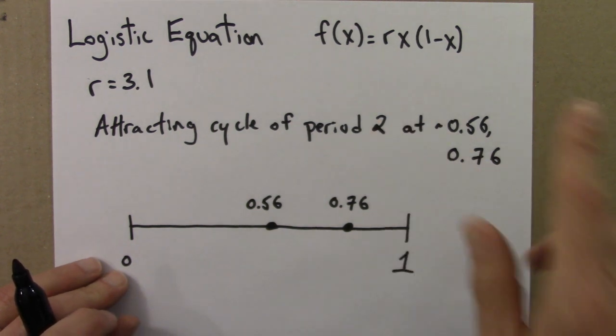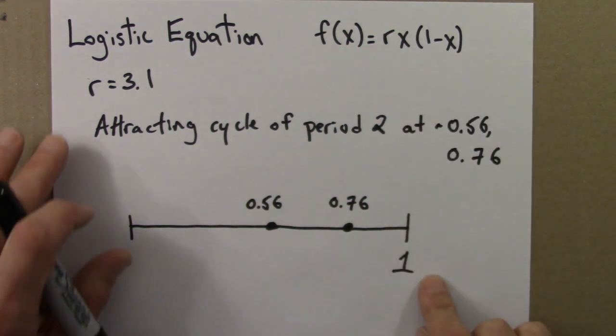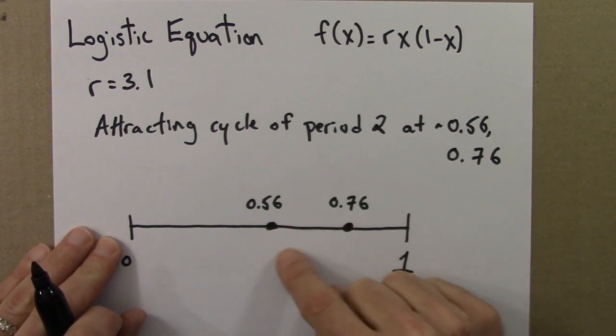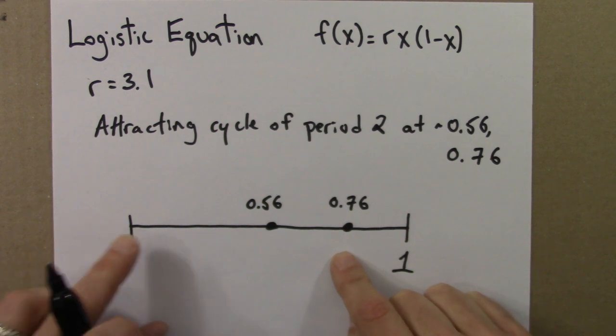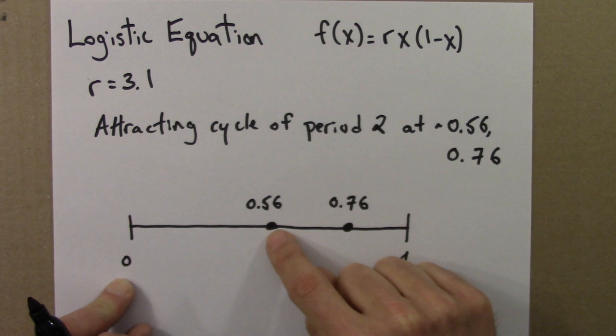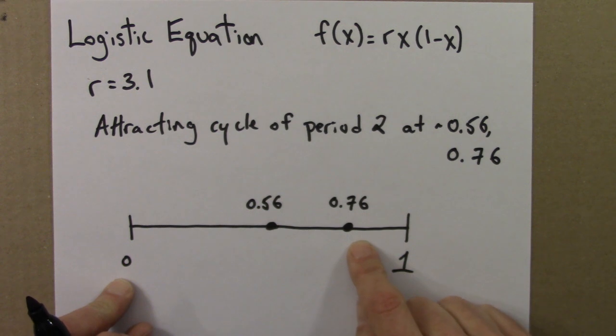If I chose an initial condition, iterated for 100 times and then watched it for 100 more, it would be bouncing back and forth between these two values. I can't really draw arrows on here like we could for the phase line because it's moving back and forth. So instead in this final state diagram, we're just summarizing the final value or values that the orbits are found in.